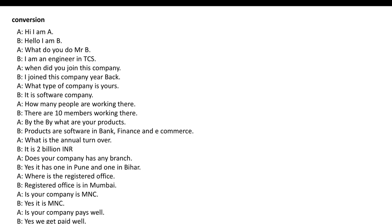A asks: 'Does your company have any branch?' — 'Kya aapki company ki koi aur branch hai India mein?' B will say: 'Yes, it has one in Pune and one in Bihar.' A then asks: 'Where is the registered office?' B says: 'The registered office is in Mumbai.'